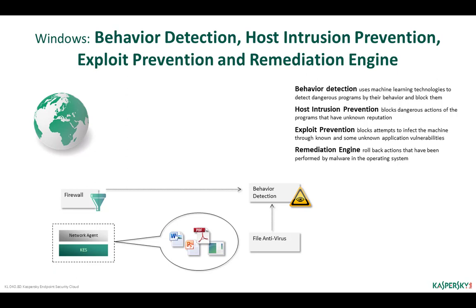Heuristic analysis is an example of a proactive defense technology. However, the main role in this protection aspect belongs to behavior detection, exploit prevention, remediation engine, host intrusion prevention, and to some extent the control components and firewall. Malware detection is the main task: behavior detection monitors program actions and compares them with dangerous activity patterns.